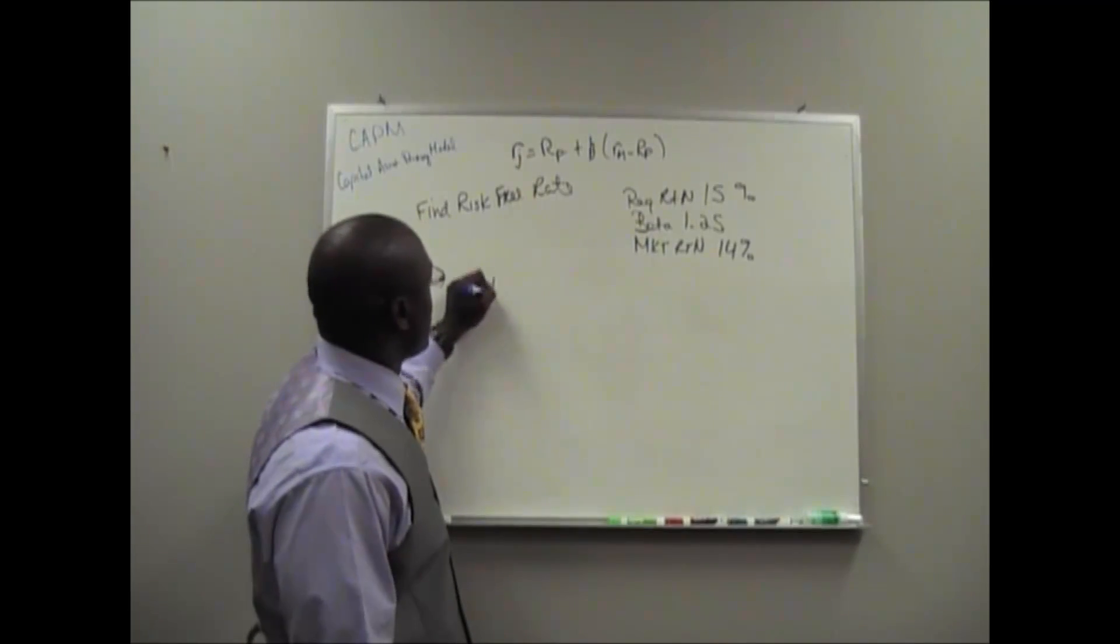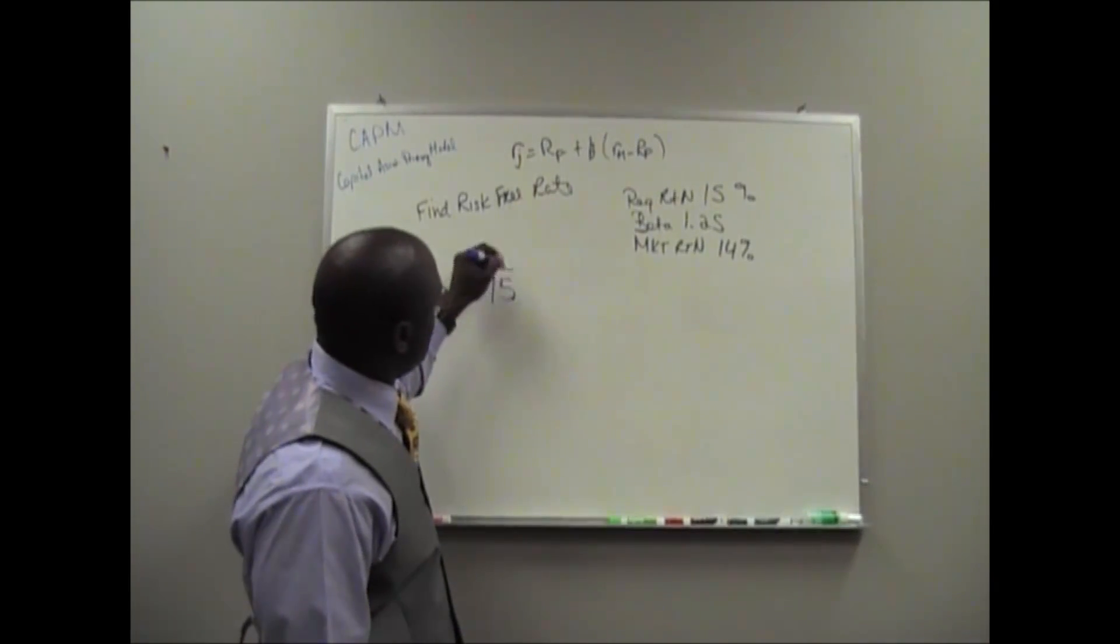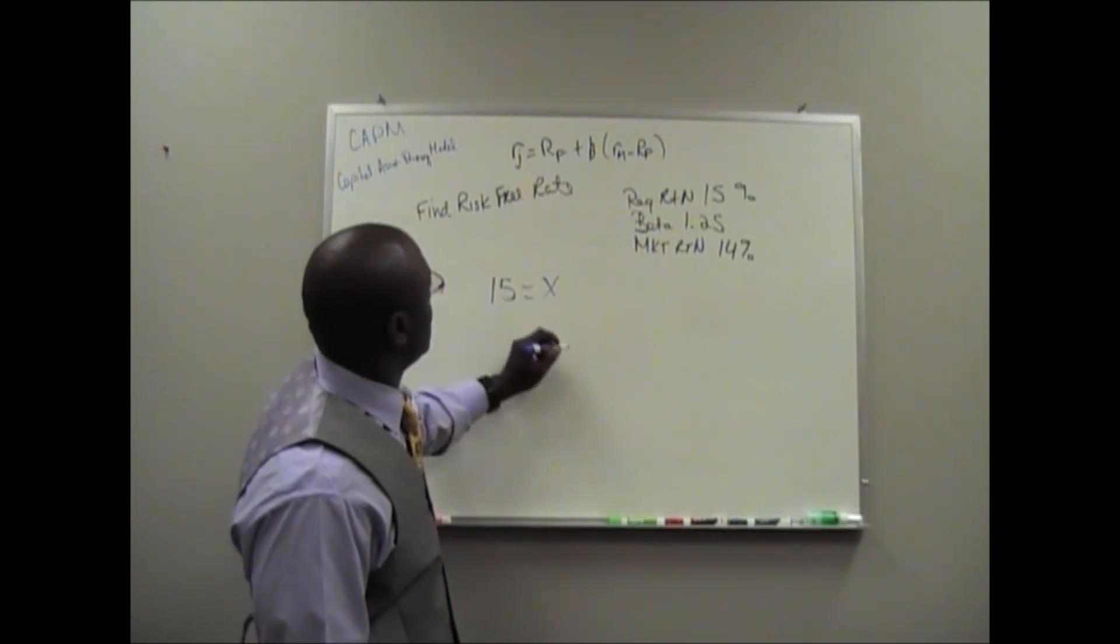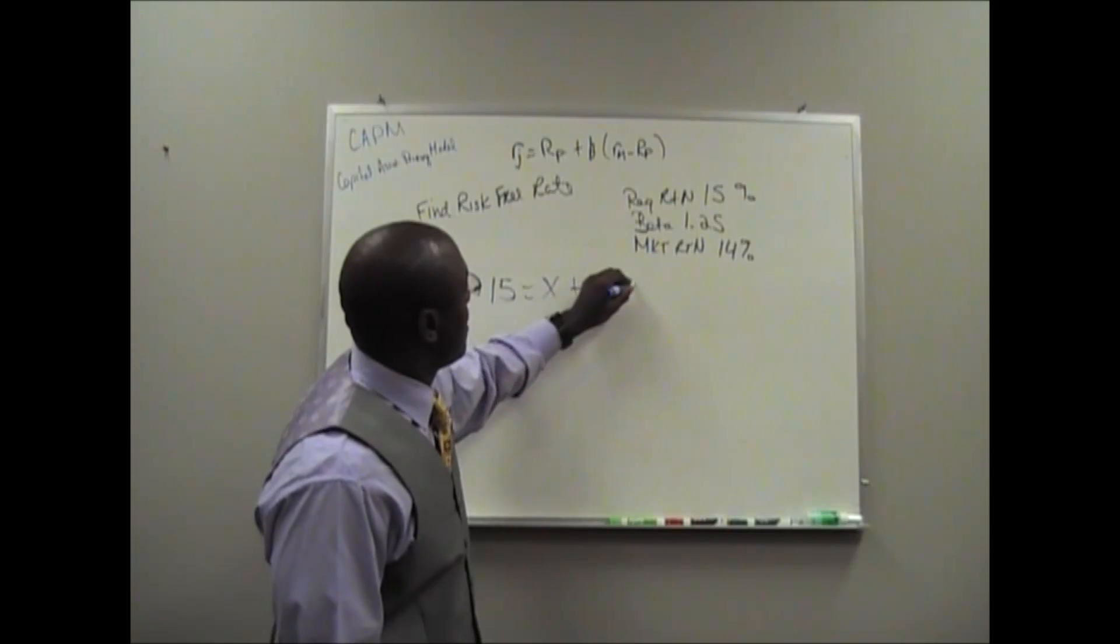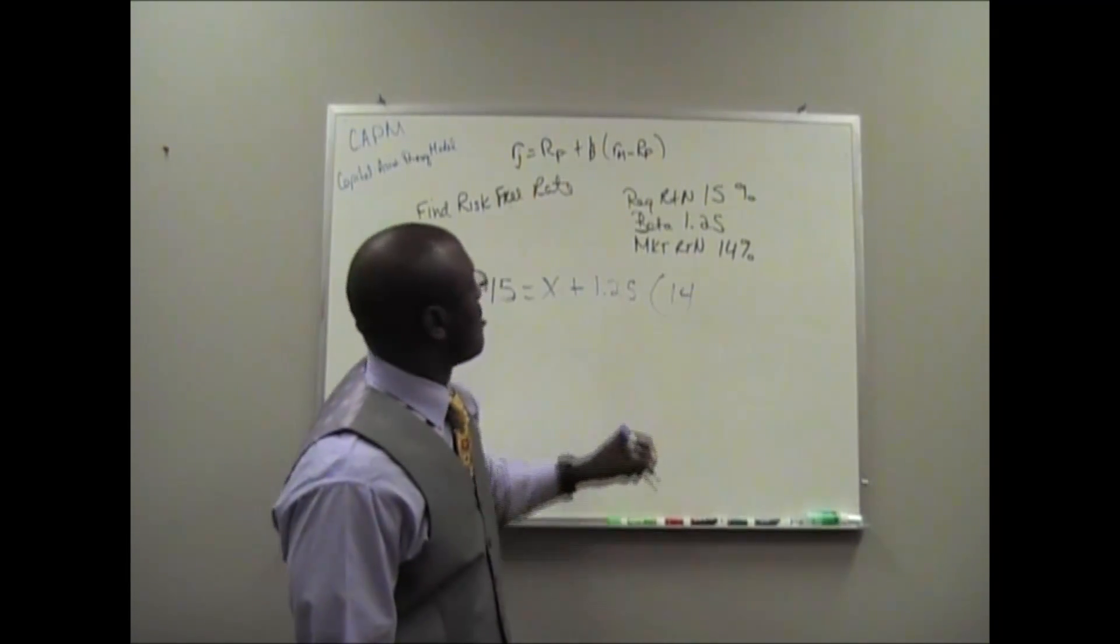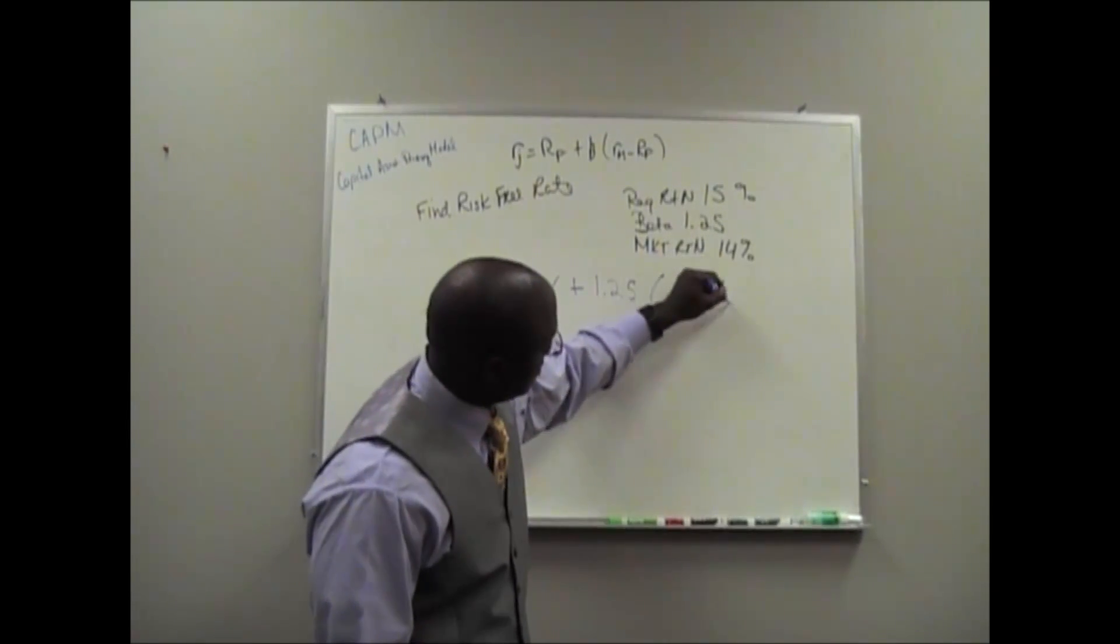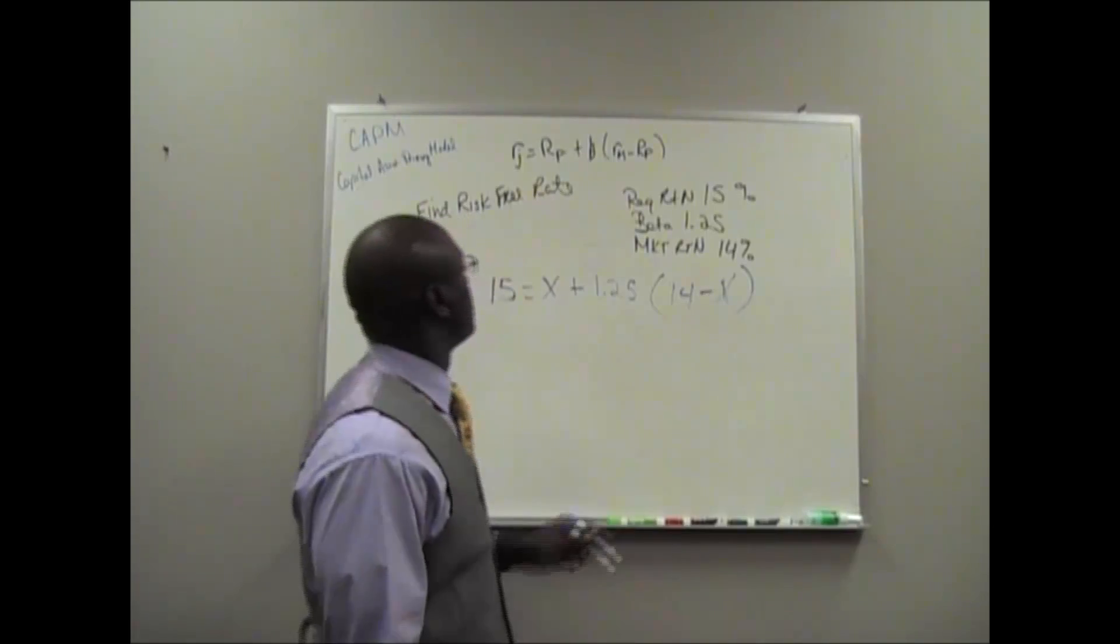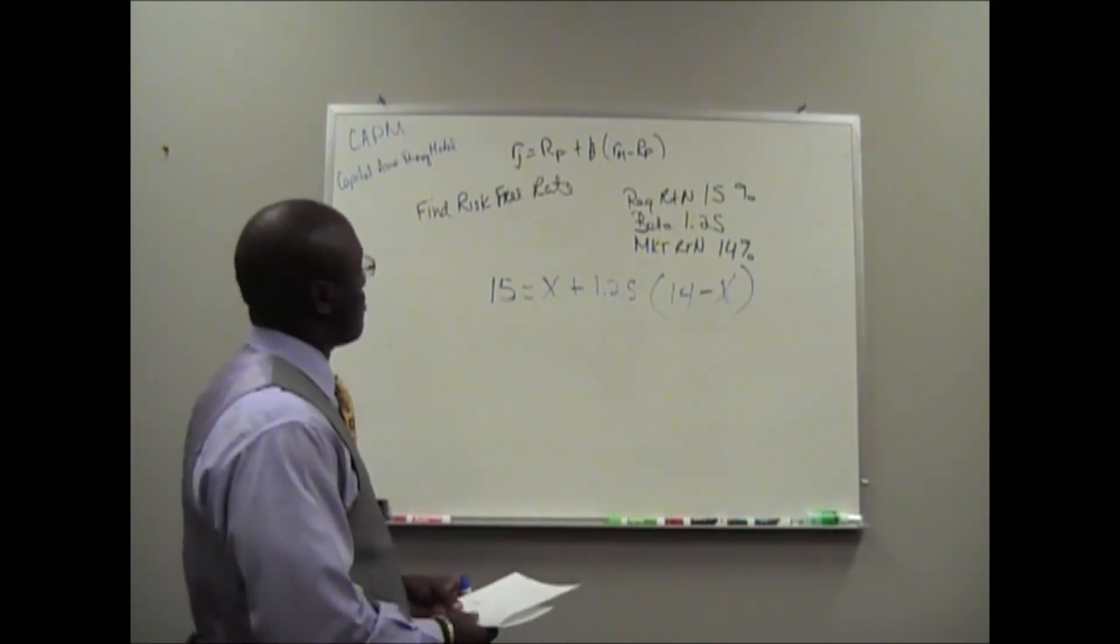They gave me the required return already, so that would be 15 equals X, plus the beta of 1.25, return on the market is 14% minus X. So once I solve for X, I will have my risk-free rate.